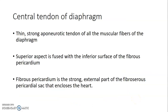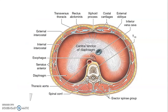The central tendon of the diaphragm is the thin aponeurotic part with no bony attachment. Its superior surface is fused with the inferior surface of the pericardium — specifically the fibrous, outer part of the pericardium, which is strong.